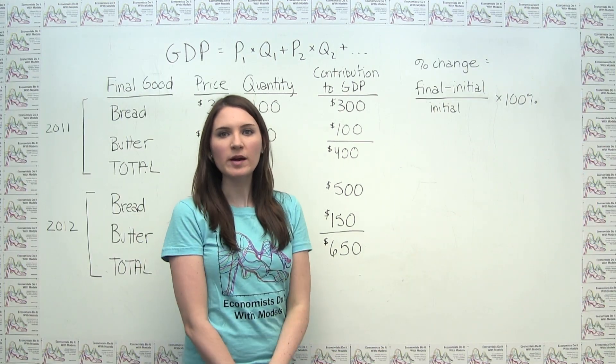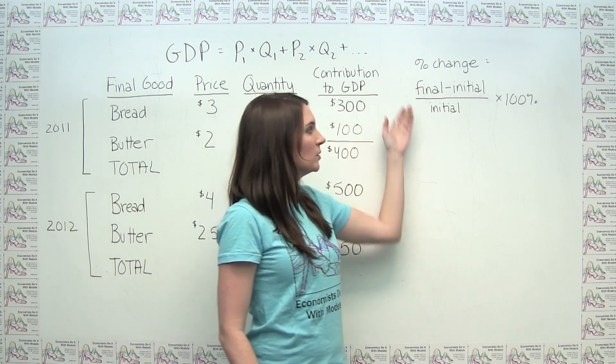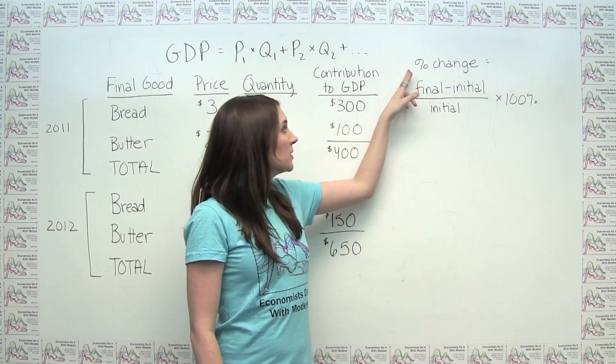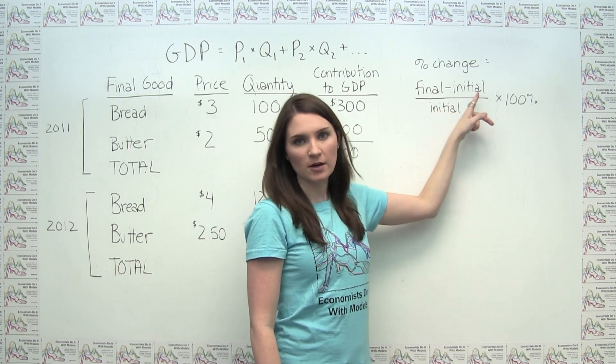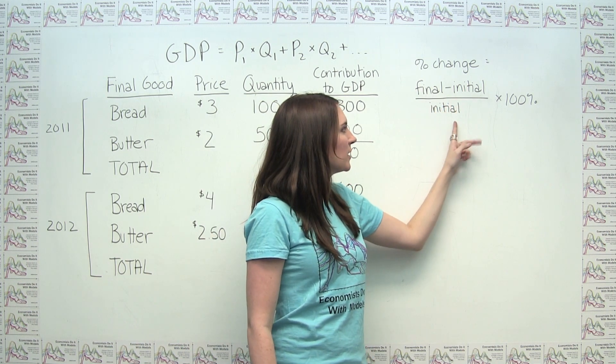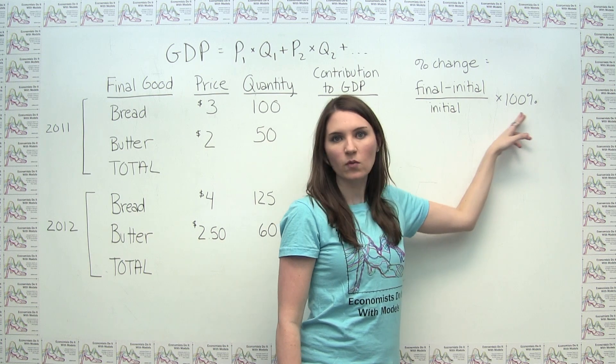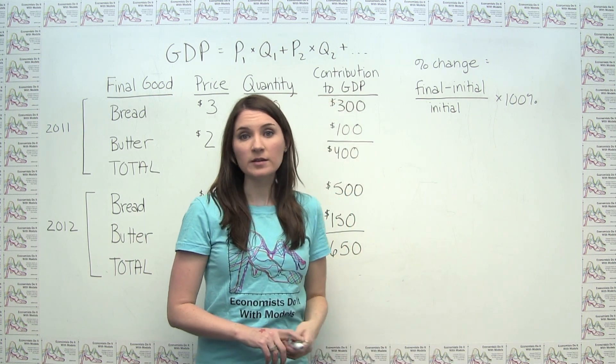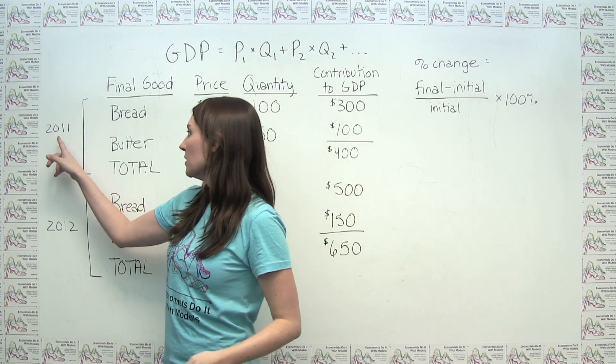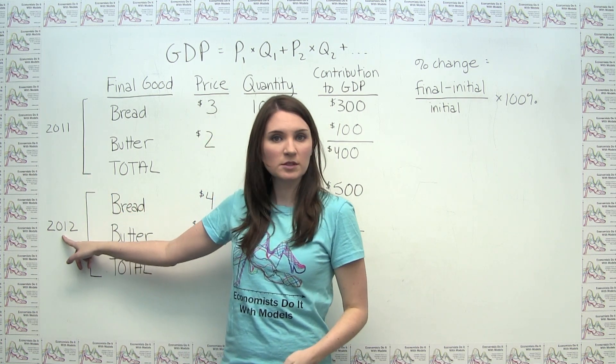As you may remember from your math class, we have a formula for percentage change. We can say that percent change is just our final value minus our initial value, divided by that initial value, and then multiplied by 100%. So we can use this formula to calculate the percentage change in GDP from 2011 to 2012.